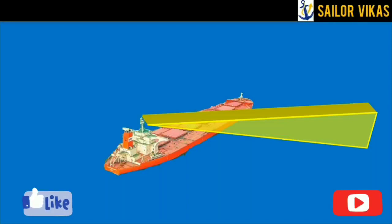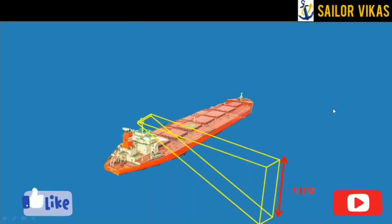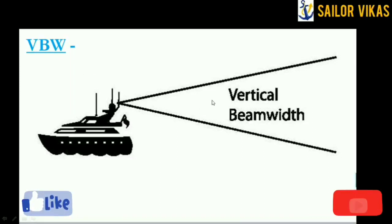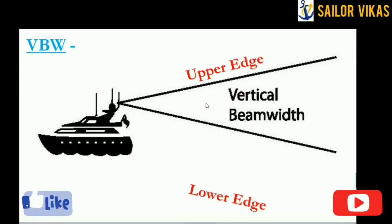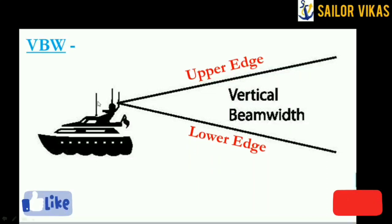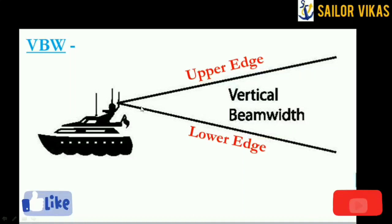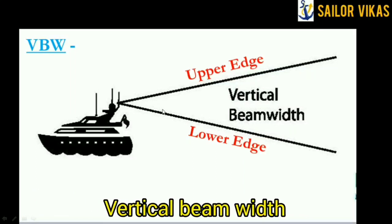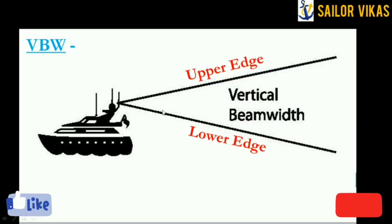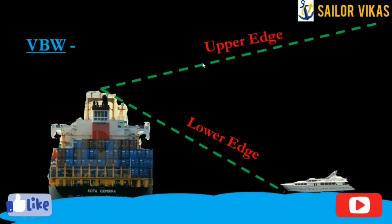Vertical beam width is the angle between the upper edge and lower edge of the radar beam. When you see a vessel sideways, it transmits a radar beam, and the angle of that beam is called the vertical beam width. The green lines shown here represent the upper edge and lower edge.